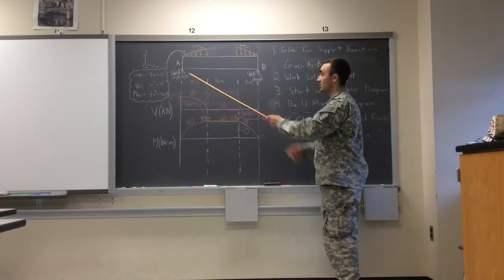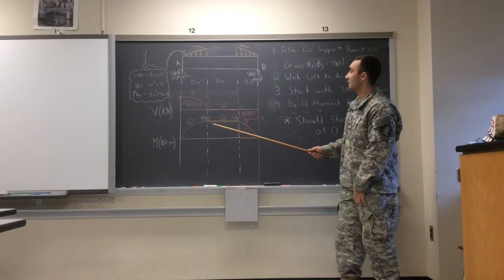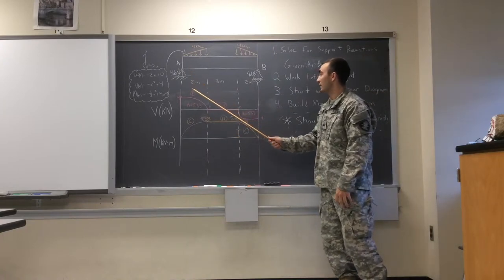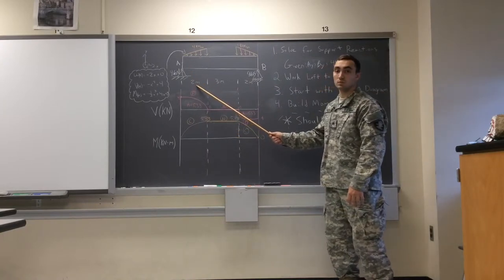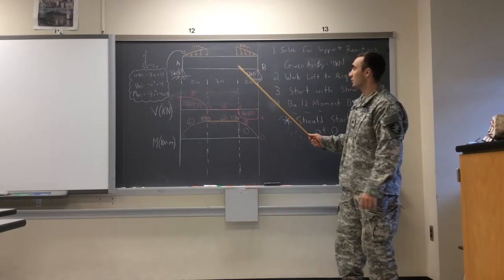To begin, we labeled our support reactions here, both four kilonewtons. And then, we have our ramp load. We got our distances, two meters, three meters, then two meters again. So, let's begin.